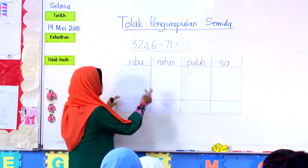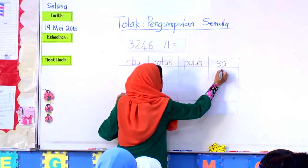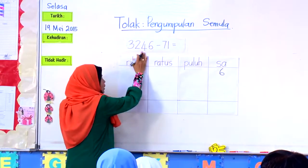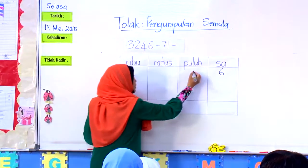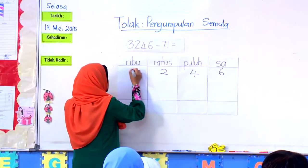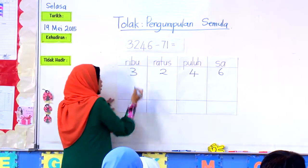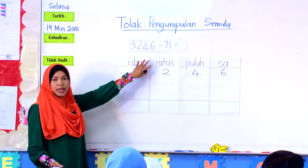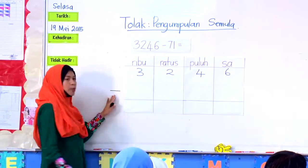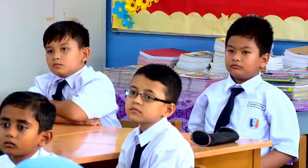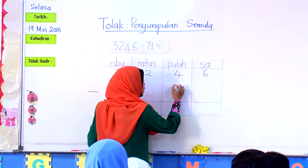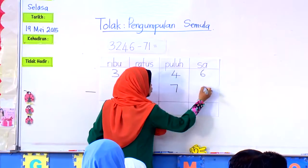6 akan diletakkan pada nilai sa. Dan 4, kita masuk kepada nilai puluh. 2, seterusnya 3. Kemudian, kita nak tolak dengan 71. Letakkan — jangan lupa simbol tolak. Tanda tolak, kita tolak dengan 71.